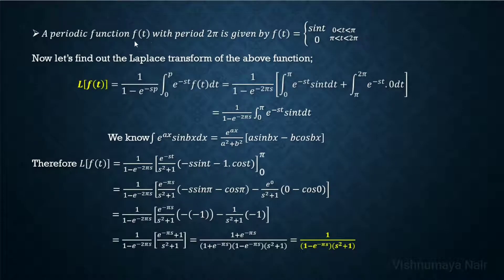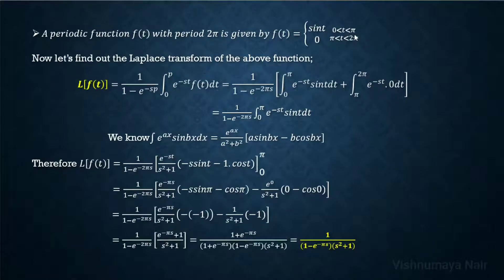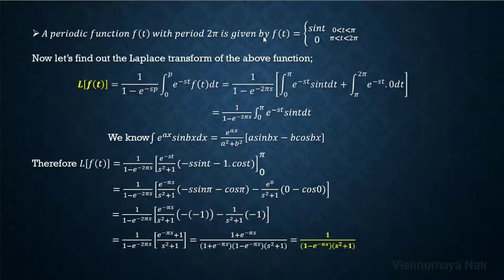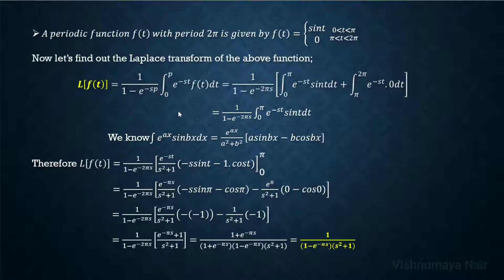A periodic function f of t with period 2π is given by: f of t equals sin t when 0 less than t less than π, and f of t equals 0 when π less than t less than 2π. Now let's find out the Laplace transform of this function. Here we have p equal to 2π.